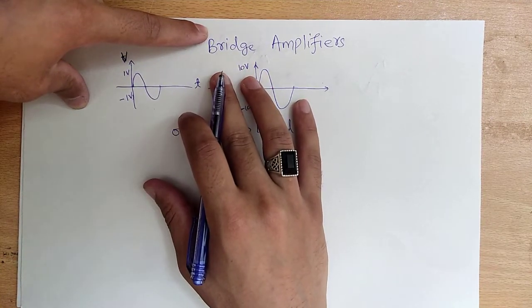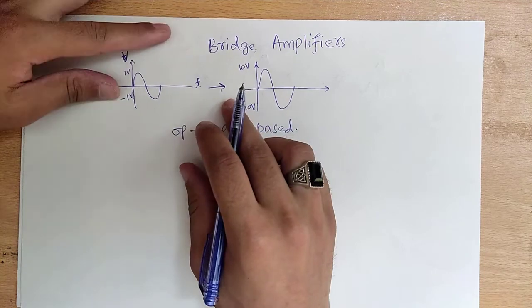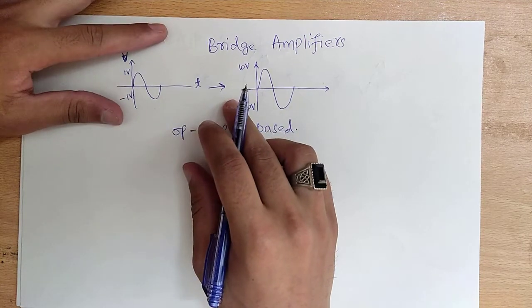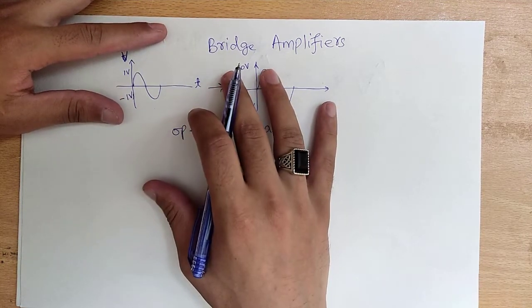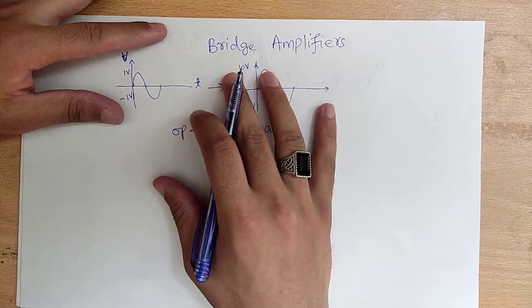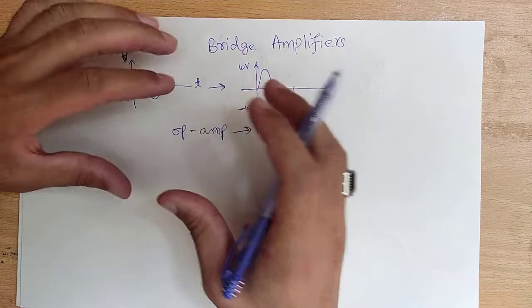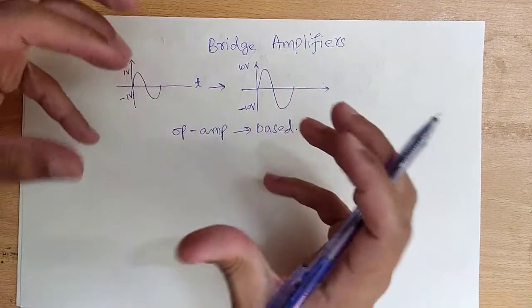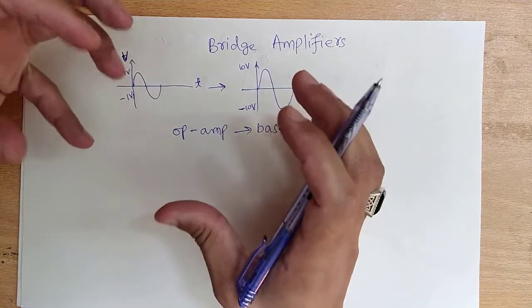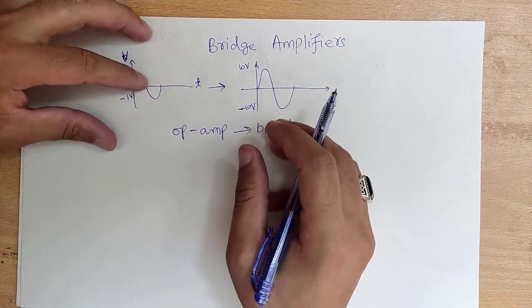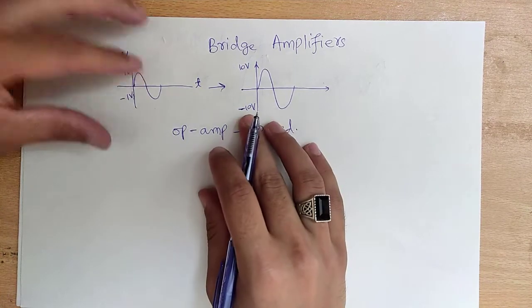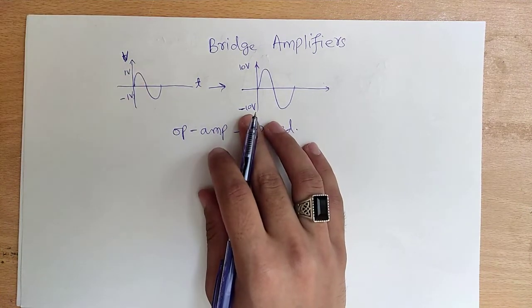Today we will discuss the bridge amplifier — its circuit, working principle, and simulation in SPICE. A bridge amplifier consists of two operational amplifiers which can give a high voltage signal at the output.